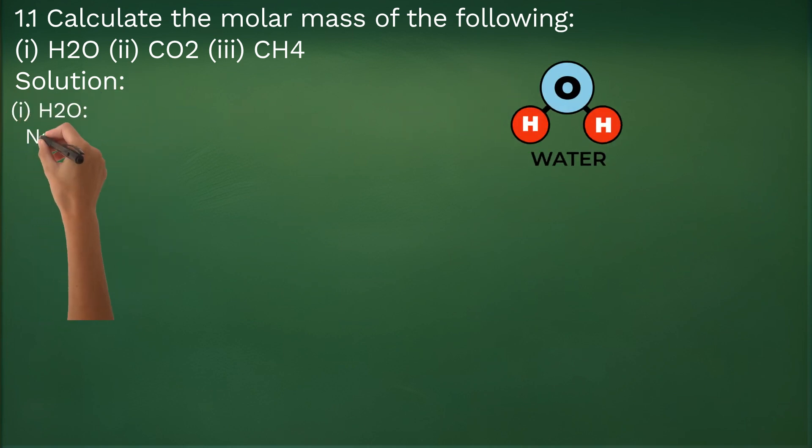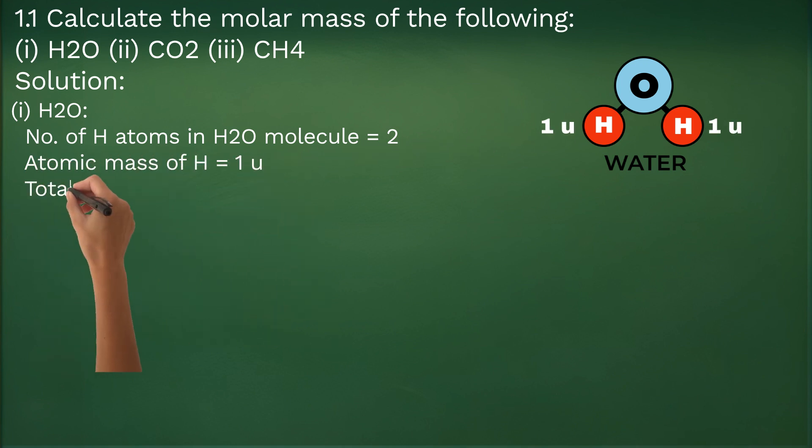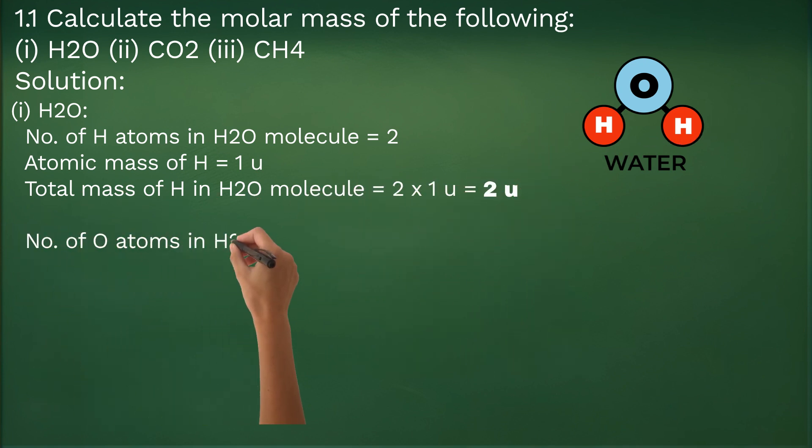First of all, let's take up H2O. H2O consists of two hydrogen and one oxygen atoms. Atomic mass of hydrogen is equal to 1U, that is atomic mass unit. We have two molecules of hydrogen in H2O, therefore we have 2 multiplied by 1, equal to 2U mass of hydrogen in H2O molecule.